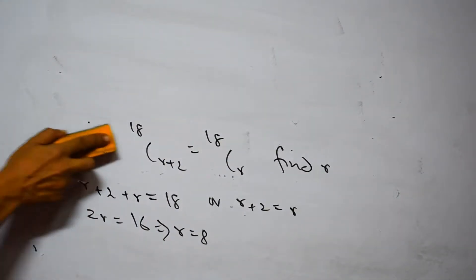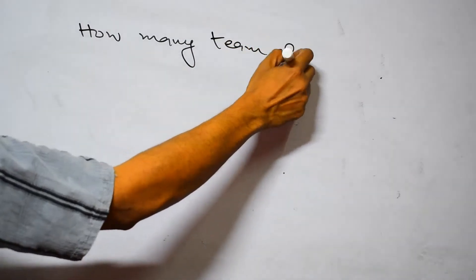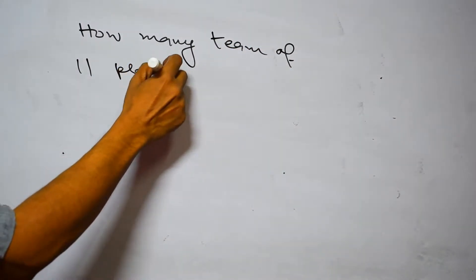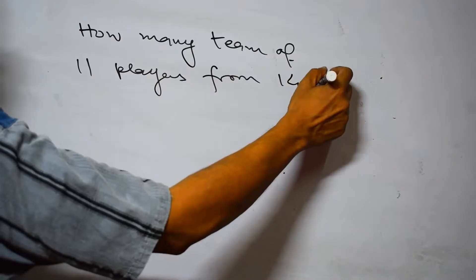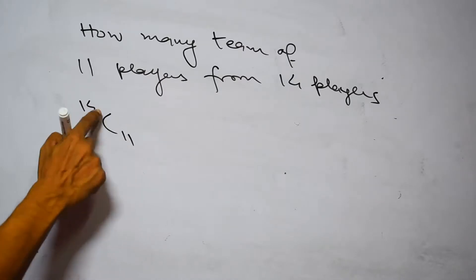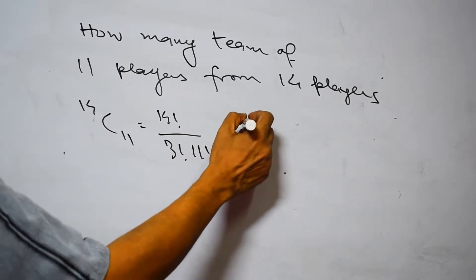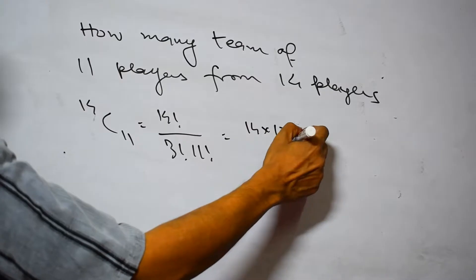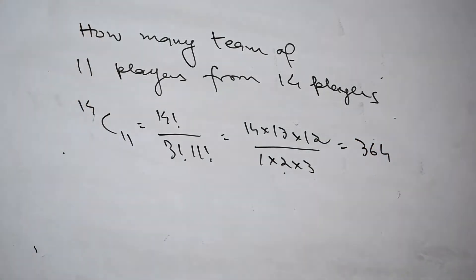Now let us take a practical problem: how many cricket teams of 11 players can be selected from 14 players? Since this is a selection problem, we use combination. We find 14C11, which equals 14 factorial divided by 3 factorial times 11 factorial, that is 14 times 13 times 12 divided by 1 times 2 times 3, giving 364 ways of selecting a team.